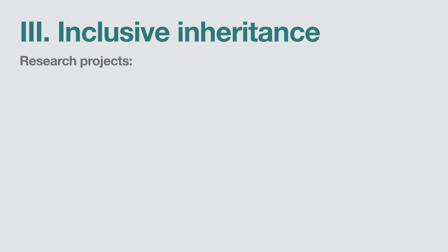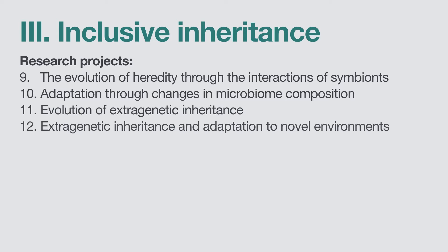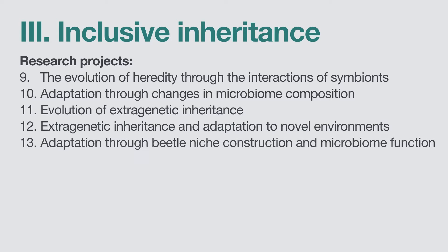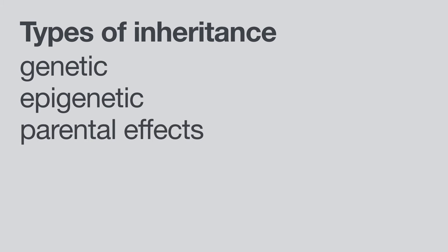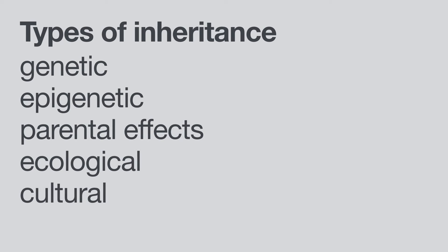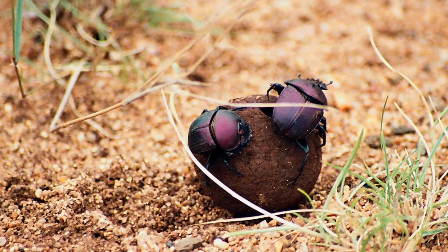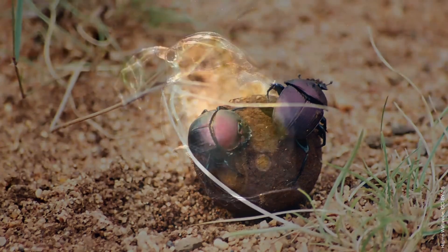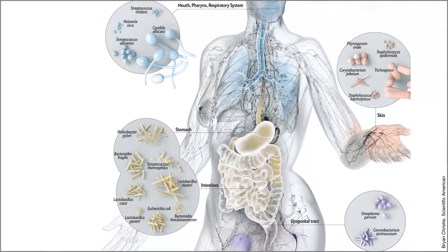The third theme, called inclusive inheritance, focuses on extra-genetic forms of inheritance. These projects model the evolution of inheritance mathematically and explore whether the mechanisms of inheritance affect future evolution. Experimental studies, for instance using dung beetles and water fleas, investigate whether extra-genetic inheritance systems also evolve properties that shape how evolution works.